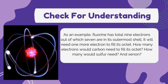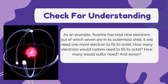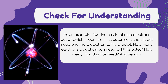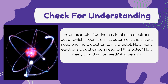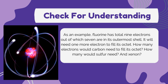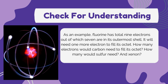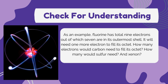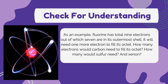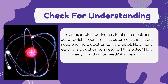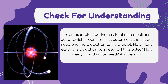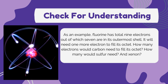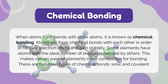As an example, fluorine has a total of nine electrons, out of which seven are in its outermost shell. It will need one more electron to fill its octet. How many electrons would carbon need to fill its octet? How many would sulfur need? And xenon?